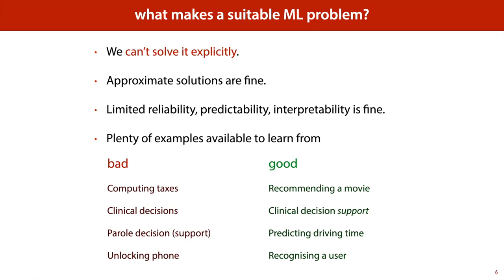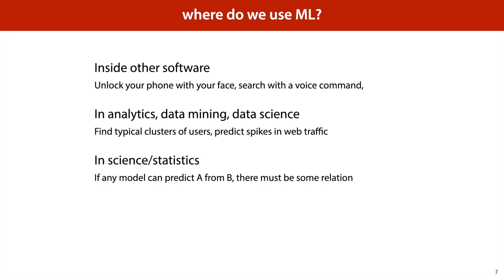Clinical decisions are another important example — for instance, a diagnosis by a doctor. This is something where machine learning can help, but ultimately it's a very important decision. Approximate solutions are not fine, and limited reliability is not fine. What we can use machine learning for is clinical decision support: we can use machine learning to build tools to make suggestions for doctors, to suggest causes behind symptoms that they may simply not have thought of. But ultimately, we need to put the responsibility in the hands of the clinician and not in the hands of the ML system.